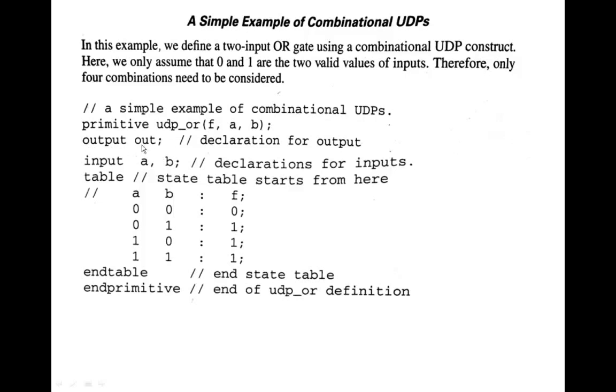Now moving on here. Output, that is F. Here it is a mistake, please note this is a mistake. Output F, input A comma B. And then here you are going to declare your state table. This is a state table between table and end table.